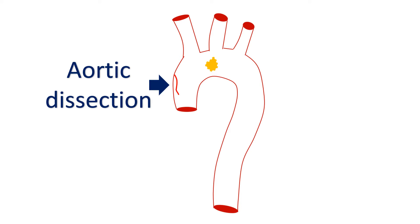Important complications of penetrating aortic ulcer include aortic intramural hematoma, aortic dissection, pseudoaneurysm formation, or even aortic rupture.